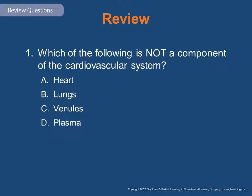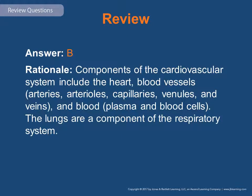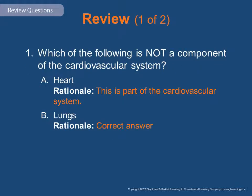Review question 1: Which of the following is not a component of the cardiovascular system — the heart, the lungs, the venules, or the plasma? The answer is B, the lungs. The components of the cardiovascular system include the heart, the blood vessels (arteries, arterioles, capillaries, venules, and veins), and the blood (plasma and blood cells). The lungs are a component of the respiratory system. The heart is cardiovascular; venules and plasma are part of it, but the lungs are not.